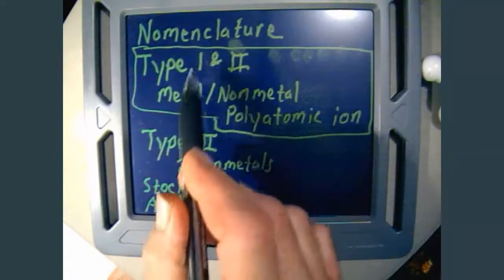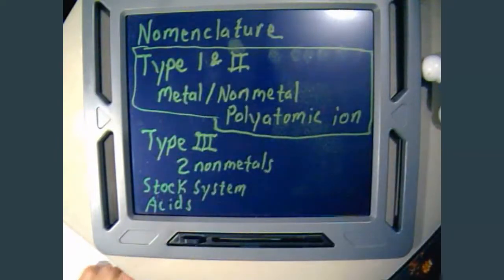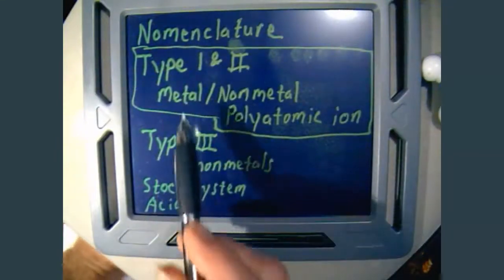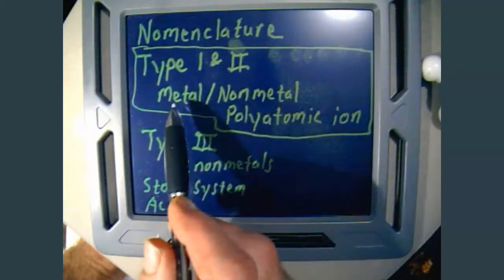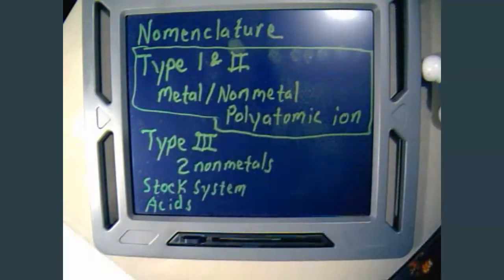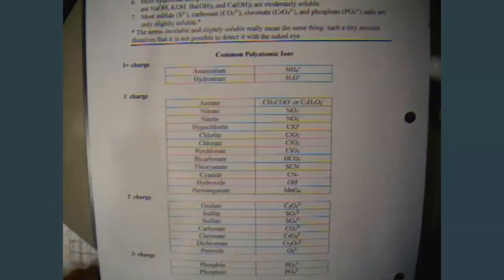Today we're going to concentrate on type 1 and type 2 naming compounds, which involves a metal and a non-metal, or a metal and a polyatomic ion. A couple of things you're going to want handy are your polyatomic ion sheet, which you can download from Google Classroom. I put it under the supplementary materials.